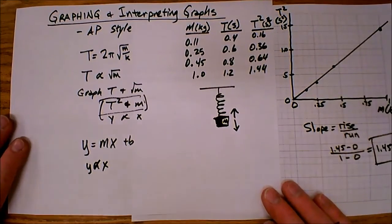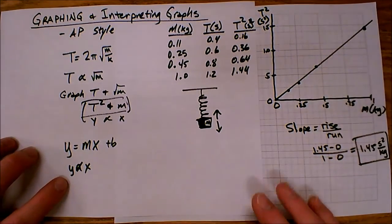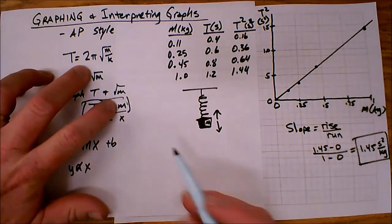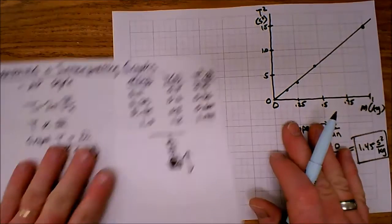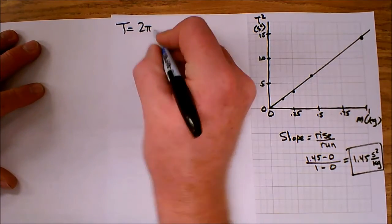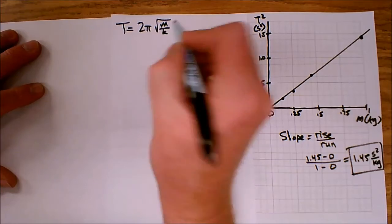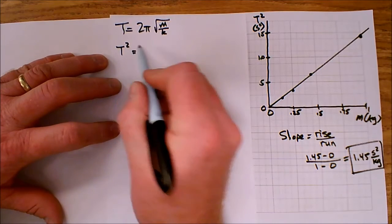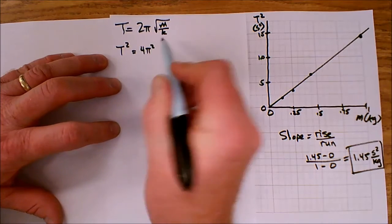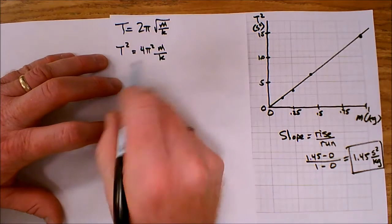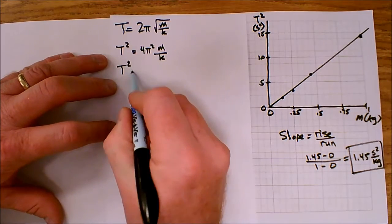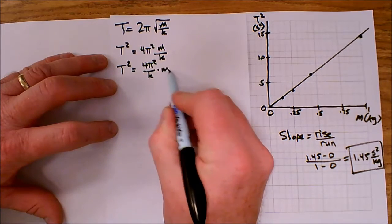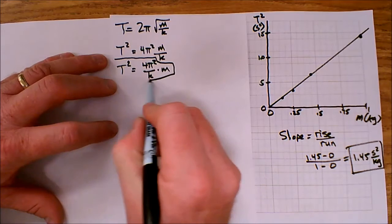Now, back to the problem. How do I use the slope to find the spring constant now? Well, if I go back to my original equation, T equals 2π square root of m over k. So T equals 2π square root of m over k. But I graphed T squared and m. So let's go ahead and square both sides. T squared equals 4π squared m over k, or I can write this slightly differently. T squared equals 4π squared over k times m.